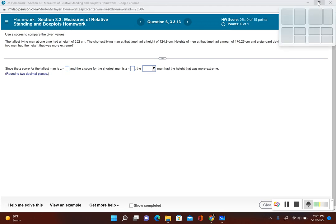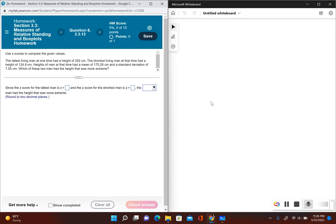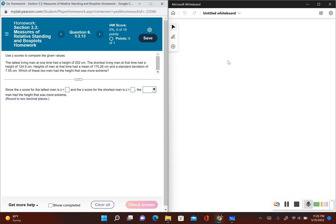So we need to find the z-scores for the height of each one of these men. We actually have to do this by hand. We can't use StatCrunch for this. So the formula that we're going to use to convert these values into a z-score, we have z equals the data value minus the mean divided by the standard deviation.